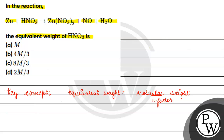If we talk about the reaction, we have: zinc plus HNO3 gives us zinc nitrate plus NO plus water.